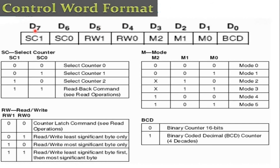The control word format of 8254 is an 8-bit register. D0 bit selects binary or BCD operation: if D0=0, binary counter (16 bits); if D0=1, BCD counter. Bits D1, D2, and D3 select the operating mode. All zeros (000) selects mode 0 — interrupt on terminal count. 001 selects mode 1 — programmable one shot. 010 selects mode 2 — rate generator.